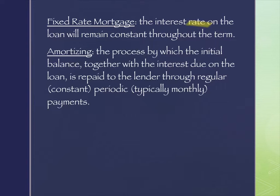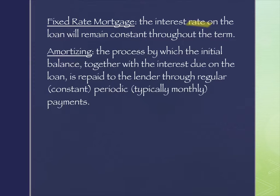Amortizing is the process by which the initial balance, together with the interest due on the loan, is repaid to the lender through regular, constant, periodic — typically monthly — payments. When you get a home loan, they give you an amortization schedule showing every single monthly payment in a row. For a 30-year note, that's 360 months — a spreadsheet 360 lines long. Amortizing is the process by which that schedule is created.